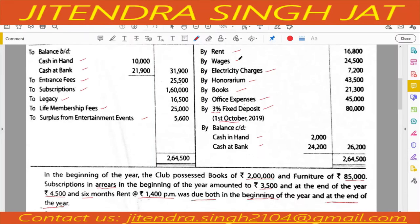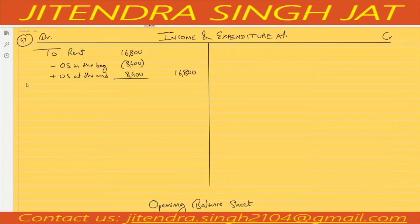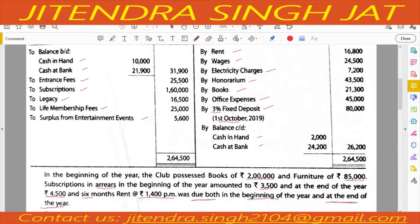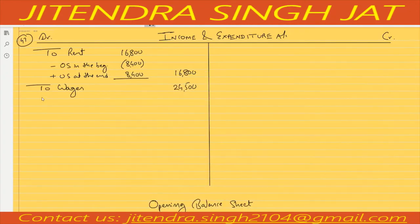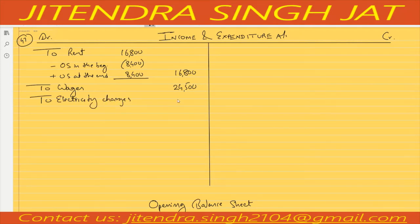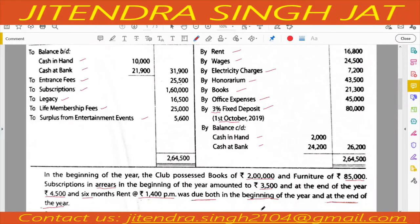Wages is given as 24,500 with no adjustments, so we record wages at 24,500. Electricity charges of 7,200 is an expense, so electricity charges of 7,200 is recorded.